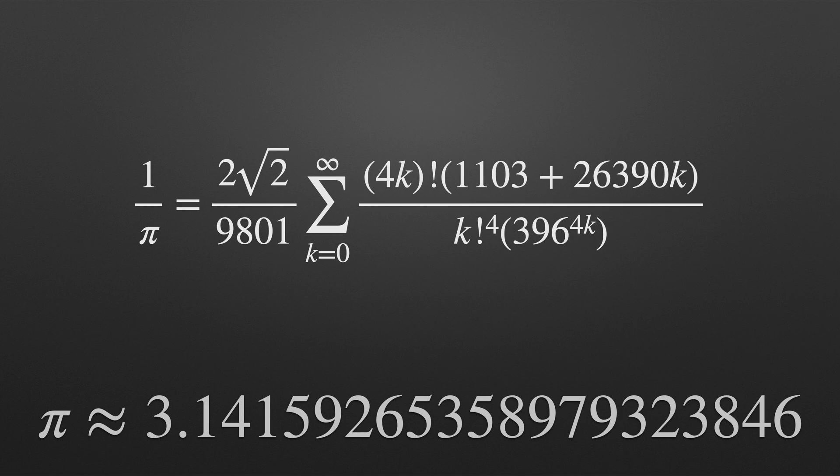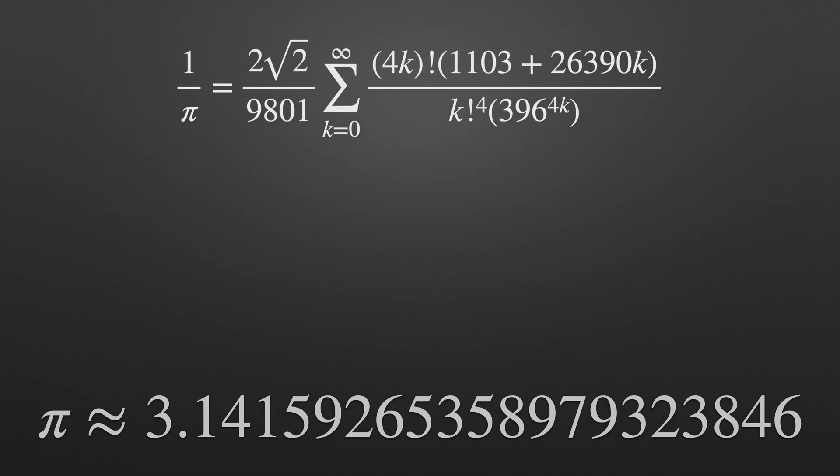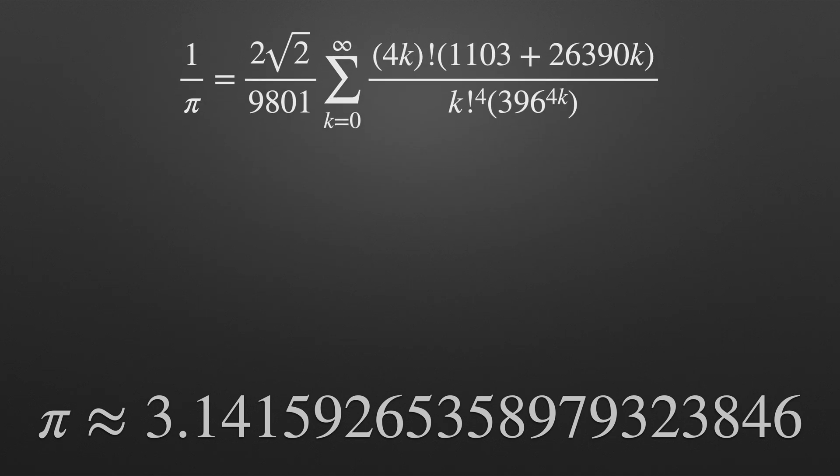Speaking of convergence one iteration of this formula gets you pi correct to six decimal places. Go for a second iteration and you've got pi correct to 14 decimal places. So this could be the formula I need but whoa just look at this thing. There's some pretty big numbers in there and look there's even exclamation marks in it to show you just how challenging it is to compute.